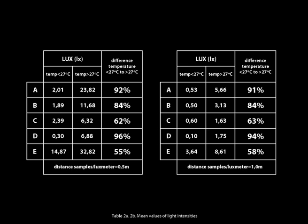According to the light measurement results shown in the tables, it is possible to conclude: the color of the samples changes the light intensity that passed through them. The light intensity is higher when the temperature is over 27 degrees. For each sample, the percentual difference of light transmission among temperatures under and over 27 degrees is similar for measurements done at one meter and half a meter distance.